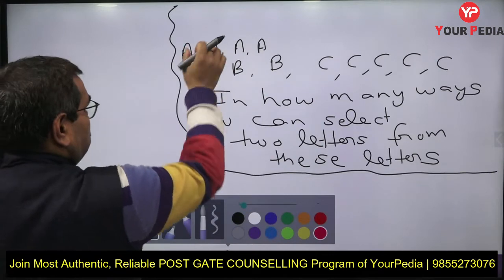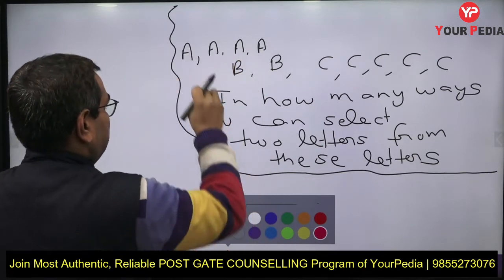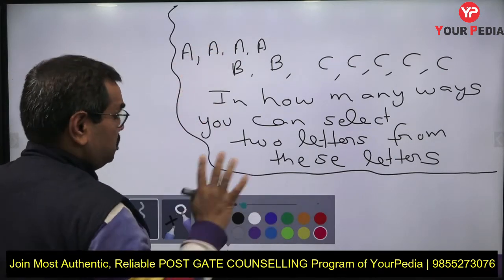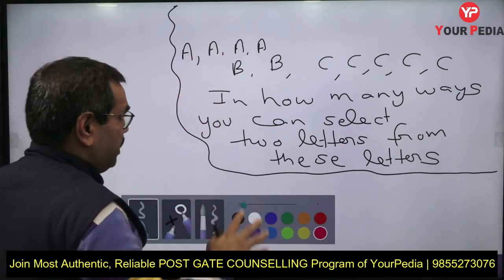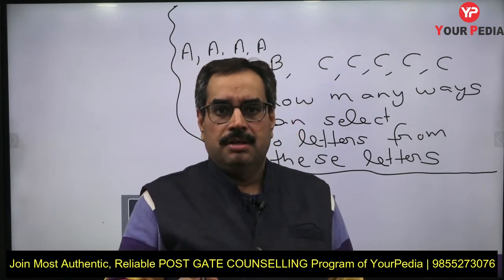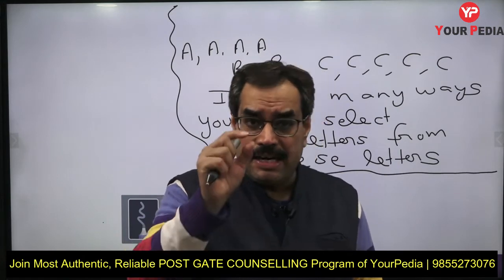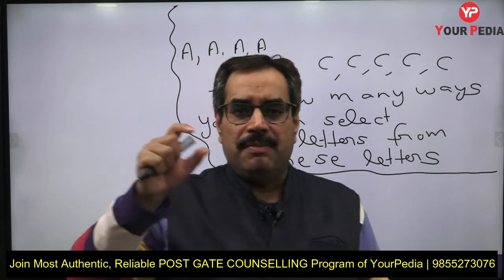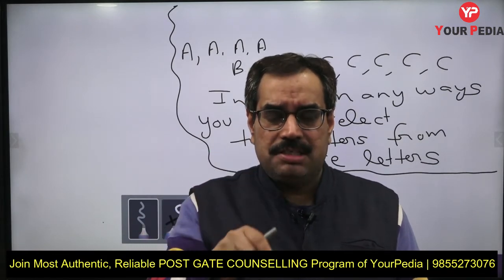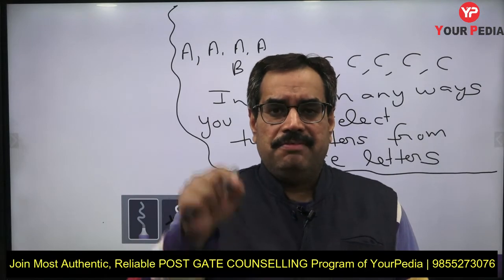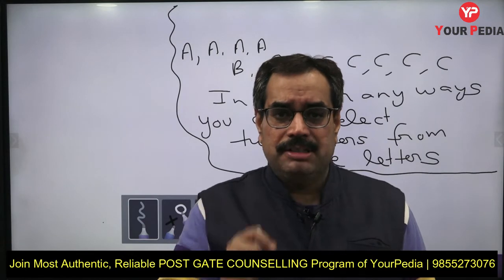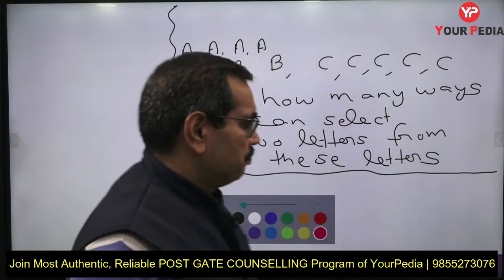These are identical letters. Choosing this A or that A makes no difference — it is considered the same selection. This is the issue with identical elements. When we have repeated elements, we don't use the formula nCr. That formula is used when we have n different items and we choose r items at a time. But if some of them are repeated, we cannot use that formula.